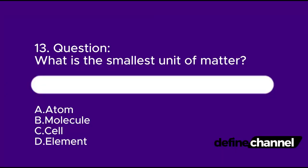Question 13. What is the smallest unit of matter? A. Atom. B. Molecule. C. Cell. D. Element. Which is the correct answer?